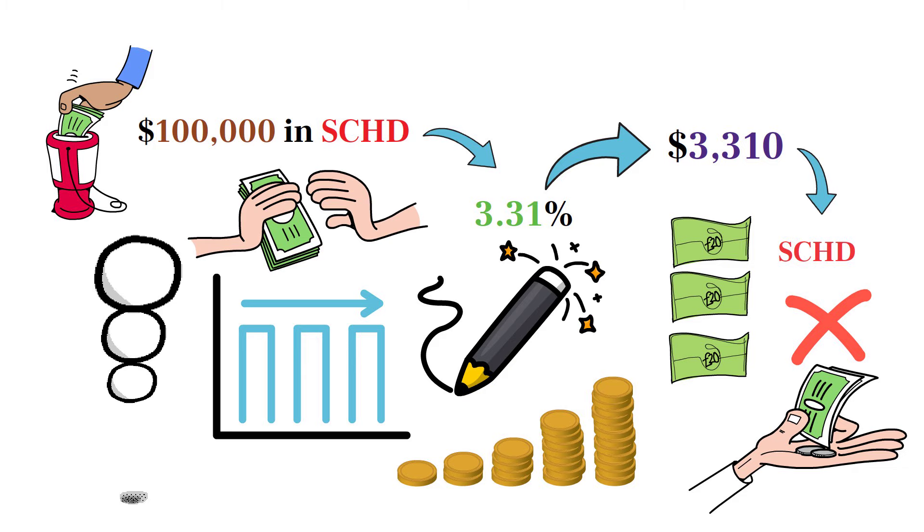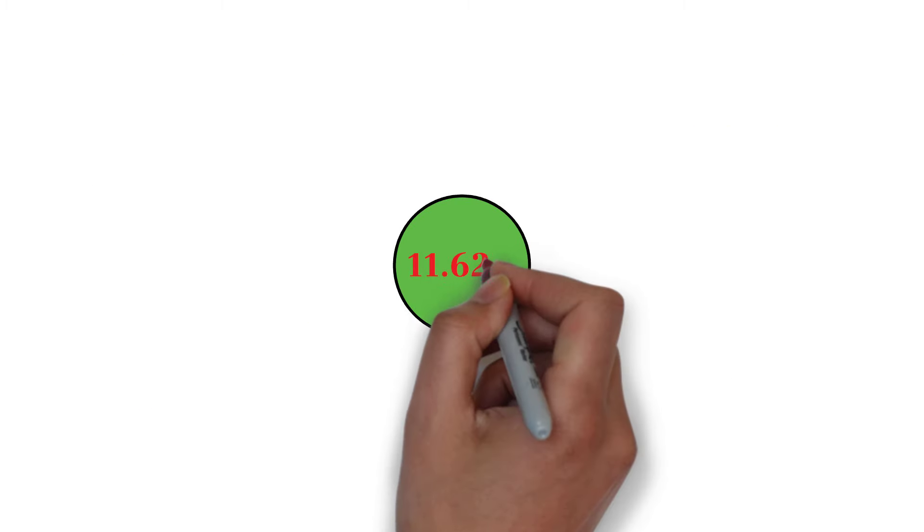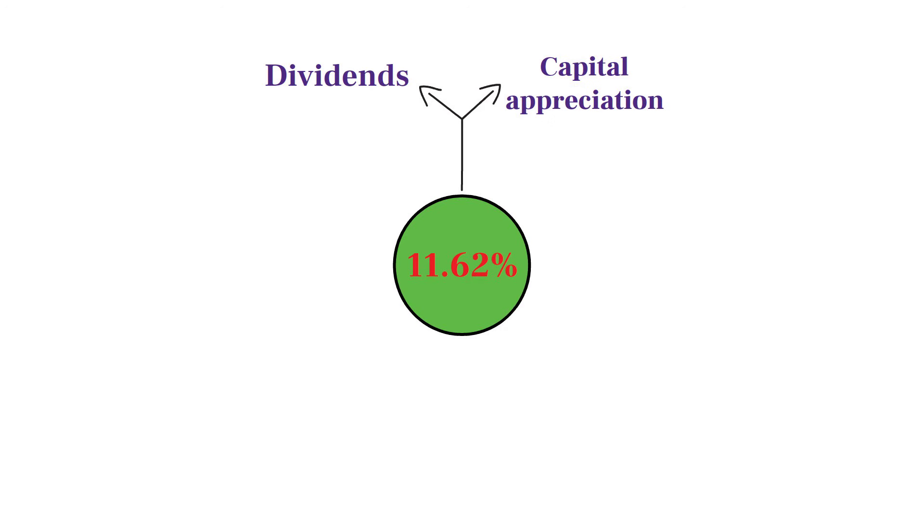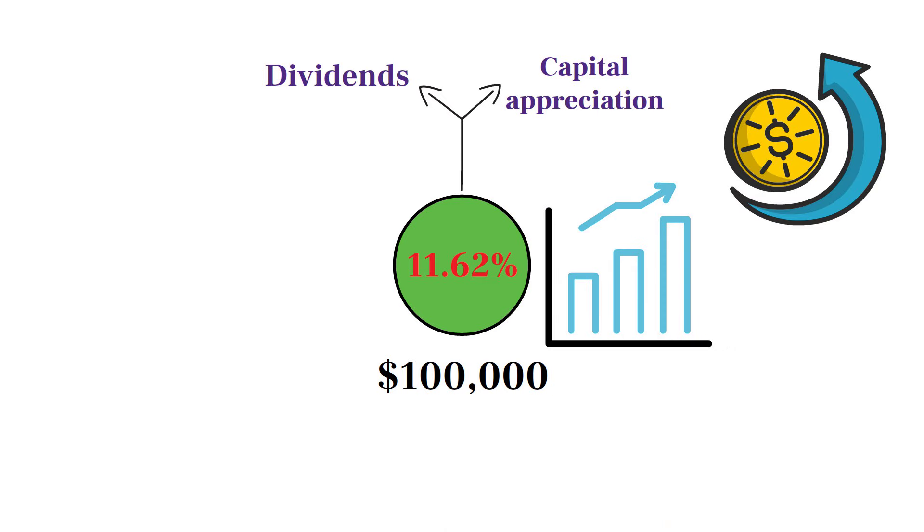For example, if we assume an average annual return of 11.62%, which includes both dividends and capital appreciation, your initial $100,000 investment could potentially grow significantly over the years. By reinvesting the dividends, not only are you increasing your share count, but you're also boosting the total amount of dividends you receive each year.